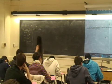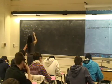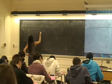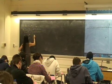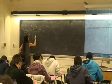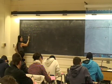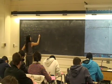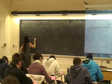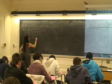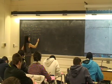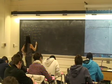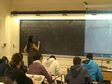So f of 0: e to the negative 0 is just 1. f prime of 0: negative one half times e to the negative 0 is negative one half. f double prime of 0 is one fourth. And f triple prime of 0 is negative one eighth.